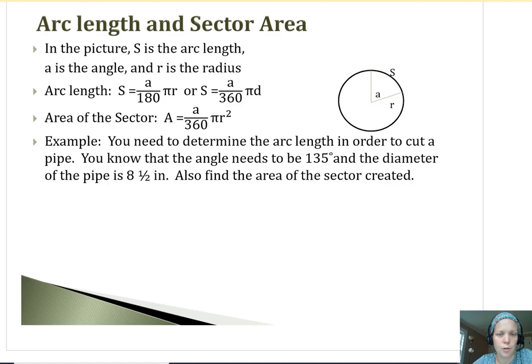So for arc length and area of a sector, this is kind of like going back to geometry, but we're talking about figuring out the circumference and area of a circle, but only a part of it at a certain angle. So kind of doing this with trigonometry since we're talking about things at angles.